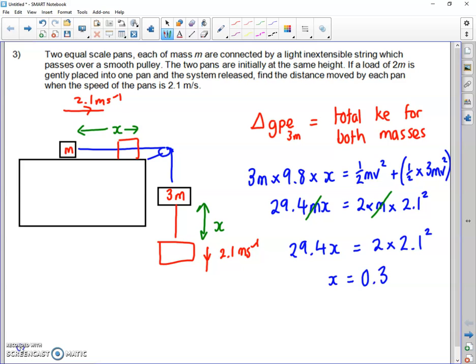If you work that through, you'll get that x is 0.3 meters. So the amount of GPE lost when the 3m mass drops 0.3 meters is enough energy to give both particles 2.1 meters per second of kinetic energy. The most important thing to learn about pulleys is that whatever happens to one happens to the other. If one of them drops 0.3 meters, the other moves across 0.3 meters. If one is traveling at 2.1 meters per second, so is the other.